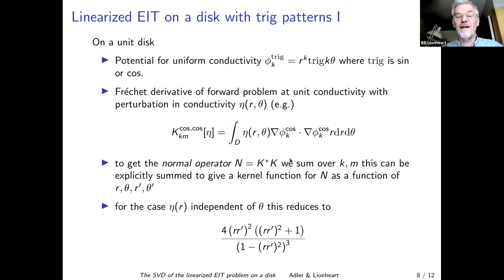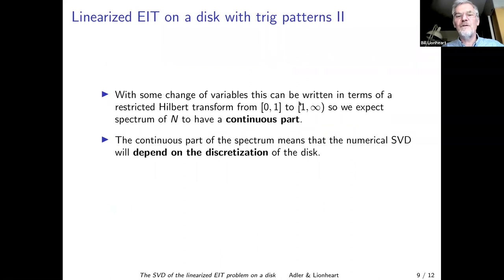And that gives us a kernel function, a function of r theta, r dashed, theta dashed, which if we apply it, integrate, it evaluates this operator, the normal operator. In the case where eta is independent of theta, it has a nice form. It's a somewhat more complicated form with the thetas in as well. It turns out that we can write that operator in terms of the Hilbert transform, but the Hilbert transform from 0 to 1 to infinity because the second variable is actually 1 over r.